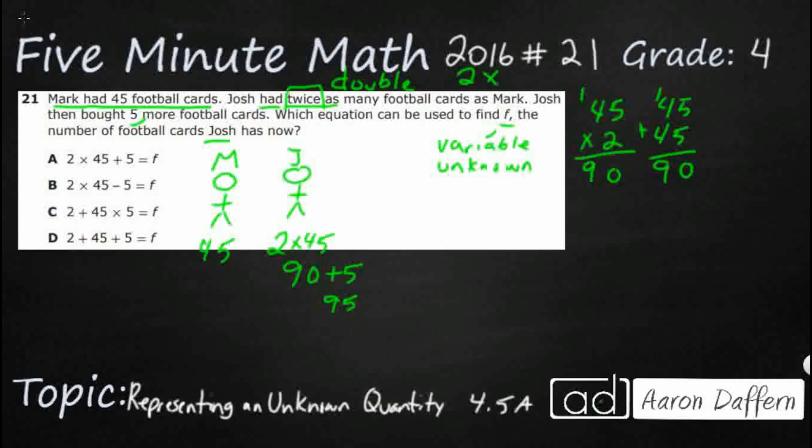So which of these equations though shows what we did? Well, let's just work out all of these equations and see if they get us to 95 because we know that that's really what we're looking for here. So this two times 45, well, we know what that is. We've already done that work. That's 90. Add the five. Yeah, that's going to be 95. So A is looking pretty good.